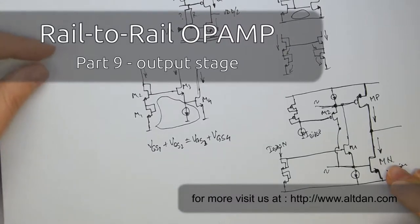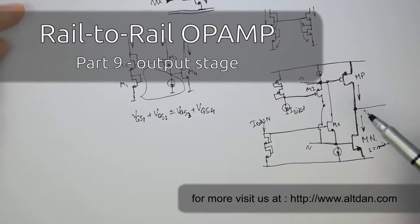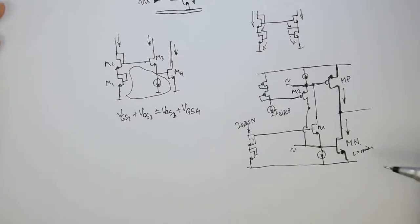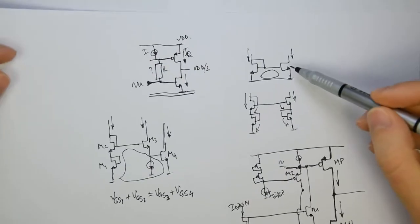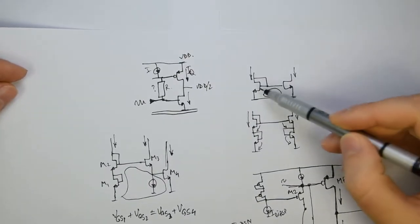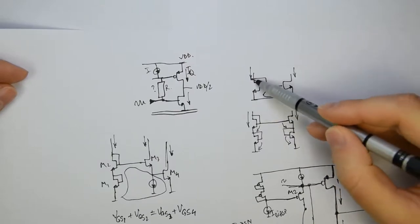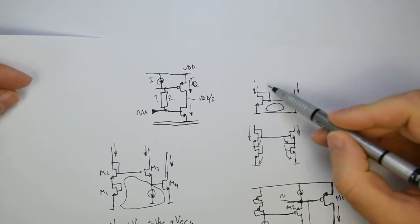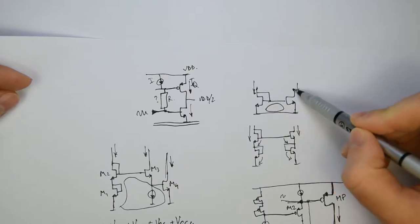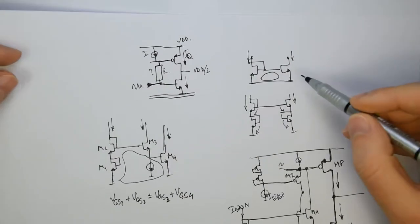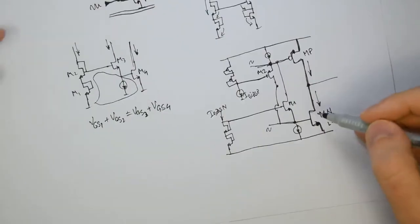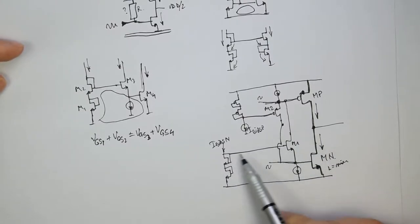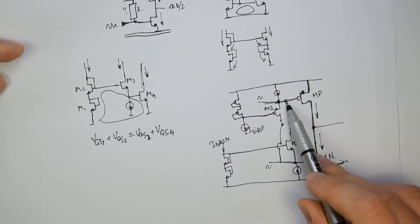Let's come back to our output stage and look at the problems that can appear with this kind of structure. The first problem is that in the case of a mirror, the currents will be equal only if the voltage on the source, gate, and drain are equal on both sides. That's why we prefer to have cascodes, because the cascode forces these drain voltages to be equal. In our case it is more complicated — this drain can never match the other one, and similarly the drain voltage here will never match the voltage from there.